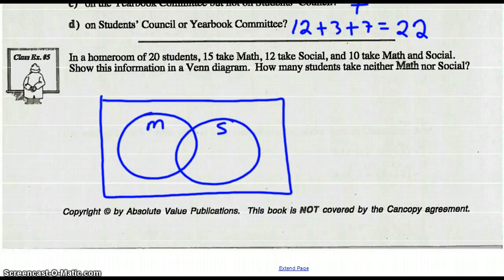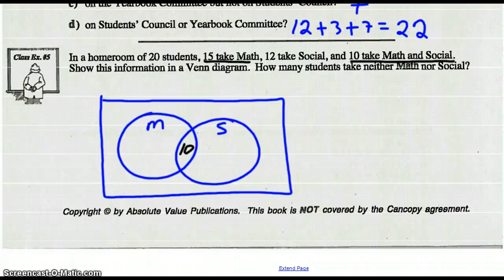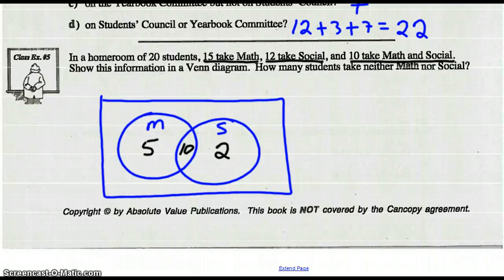So what do we know for sure? We know that 10 take math and social — the intersection of math and social is 10. We know 15 take math. Well, I've already got 10 in the math circle, so I need another 5. There are now 15 people in the math circle. And 12 take social — there's already 10 in the social circle, so two more make a total of 12 in the social circle.